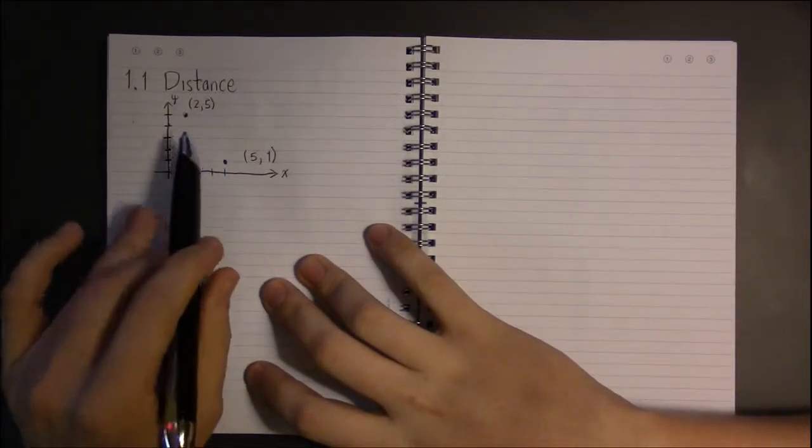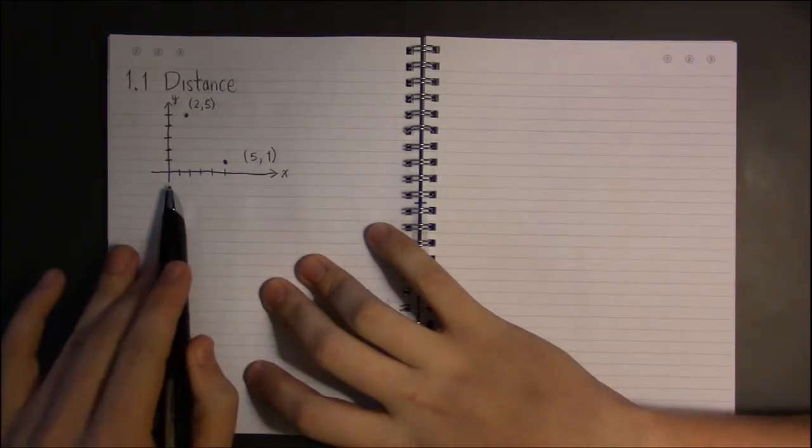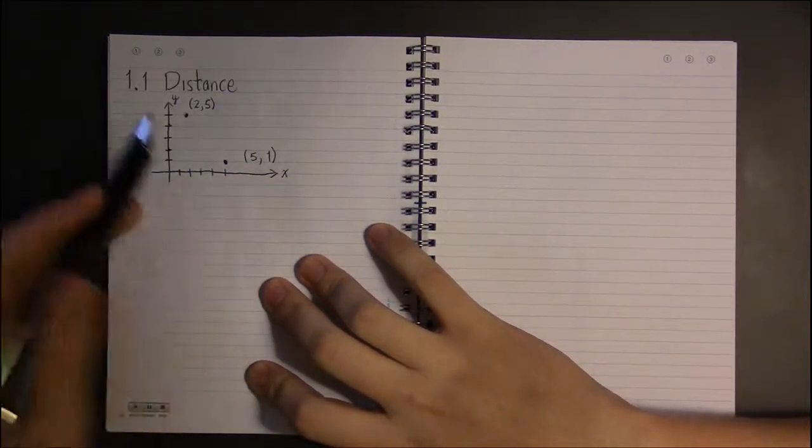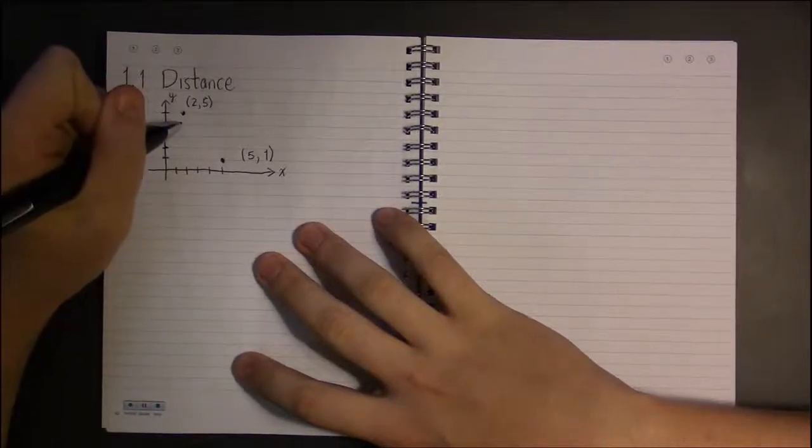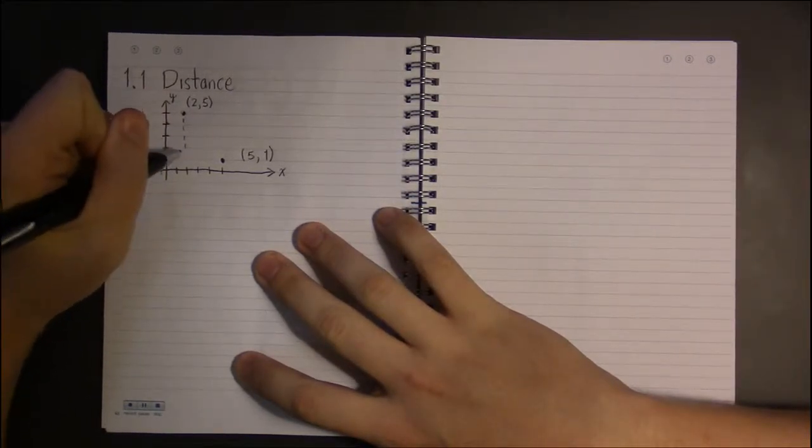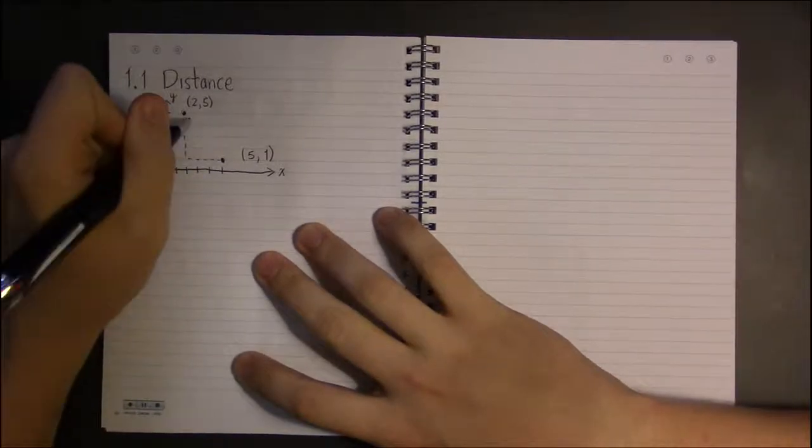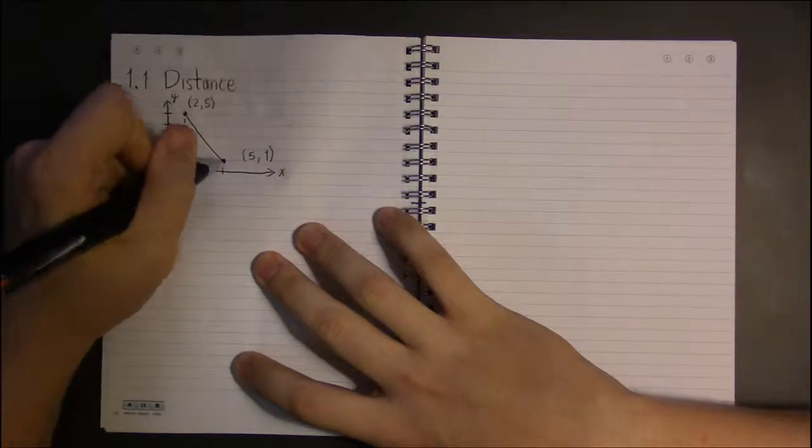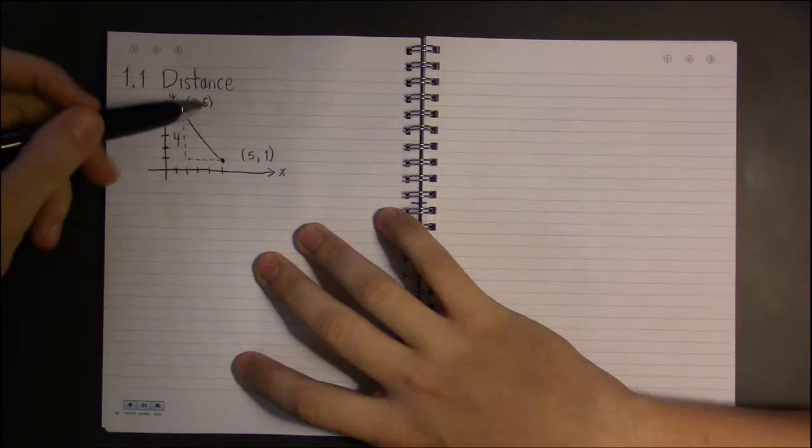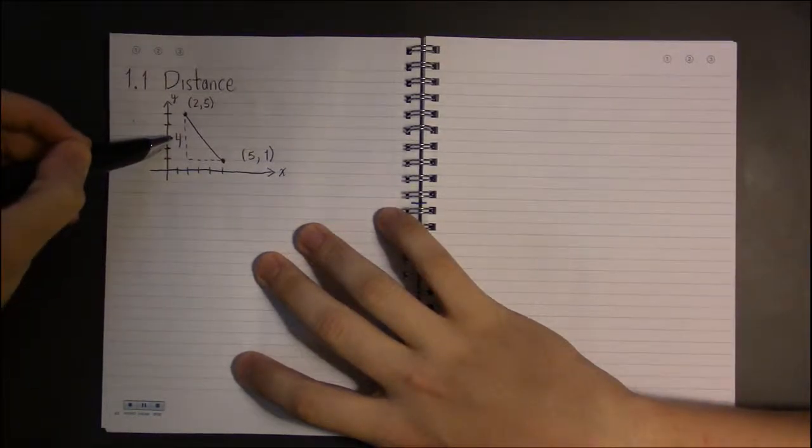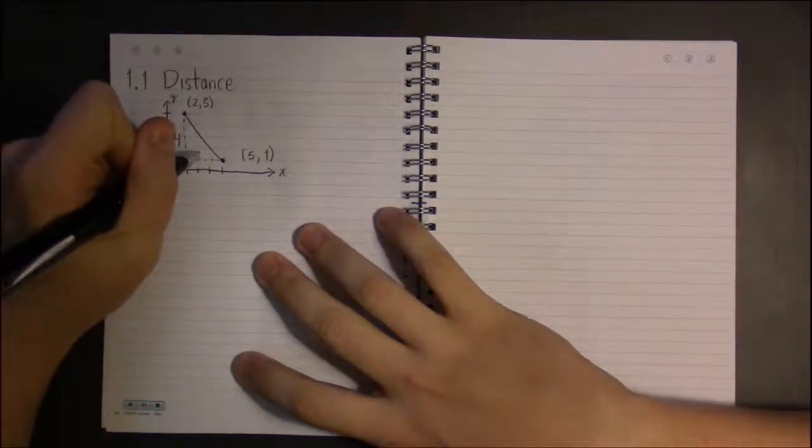Given two points like, say, the point (2,5) and the point (5,1), you can compute the distance if you know about the Pythagorean theorem. This distance between these two points, 5 minus 1 is 4, and 5 minus 2 is 3.